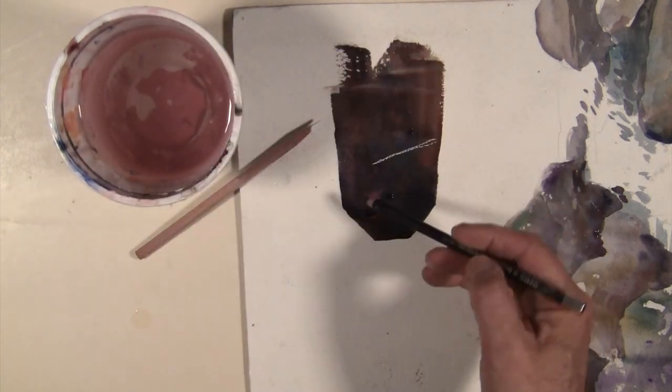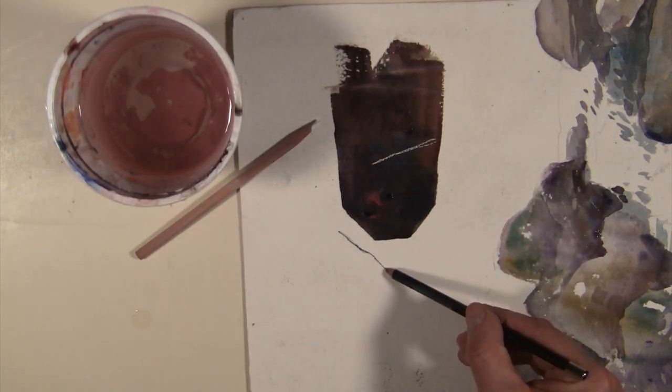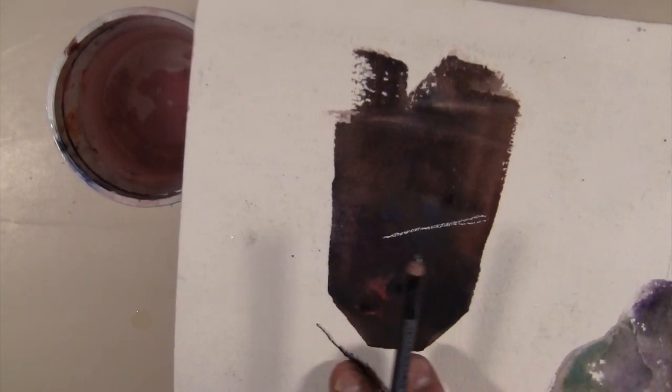Again, you wet the pencil. And now this is the one that you use for General's sketch and wash. So this one is water-soluble, and so you can see it's like putting pigment down on the paper.